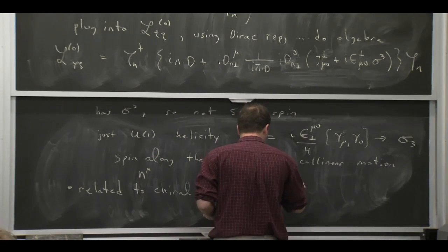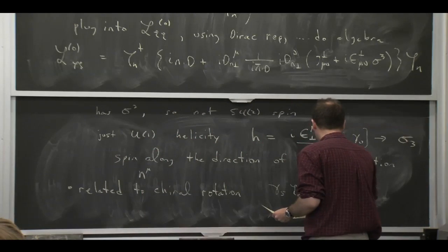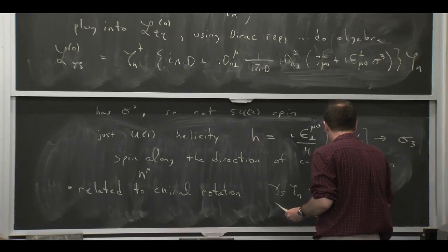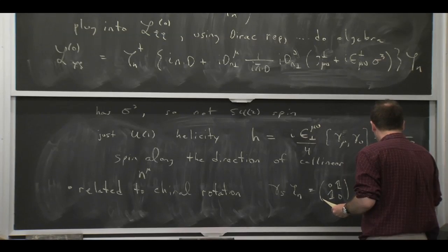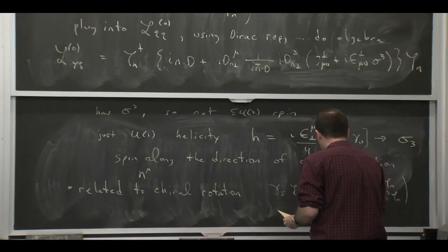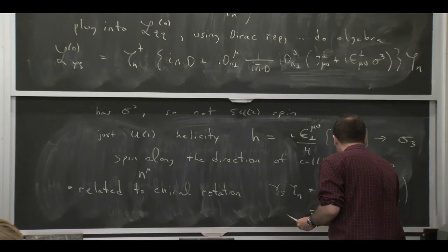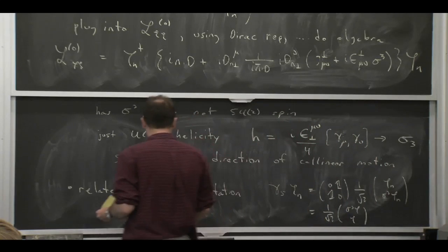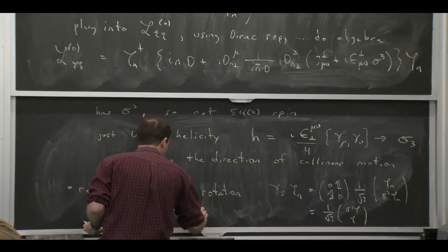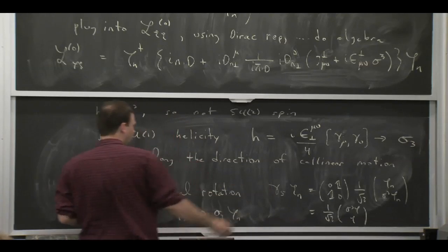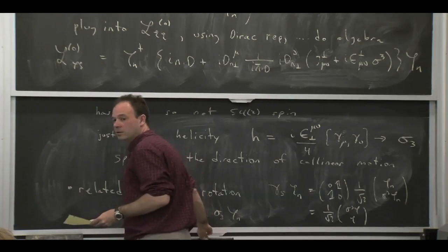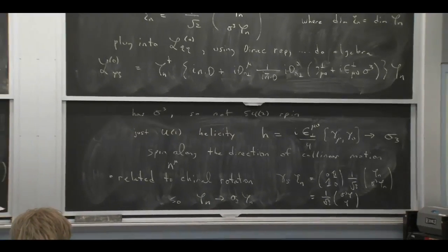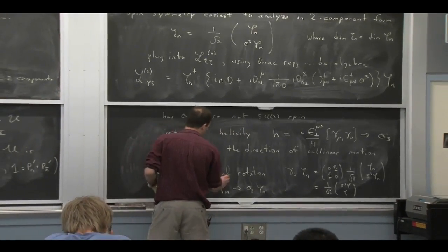So this is just related to the chiral rotation. If you look at gamma 5 times C, then gamma 5 in our representation would be 0, 1, 1, 0. And then if I write it out in terms of this two-component thing, that is just giving me 1 over root 2. And it's swapping up and down. And so that just means that phi n has gone to sigma 3 phi n. So multiplying by gamma 5 is actually the same as multiplying by sigma 3 in two-component notation. So this is not really a new symmetry.